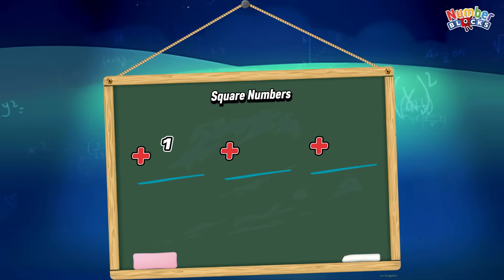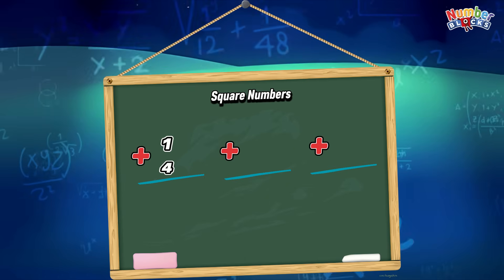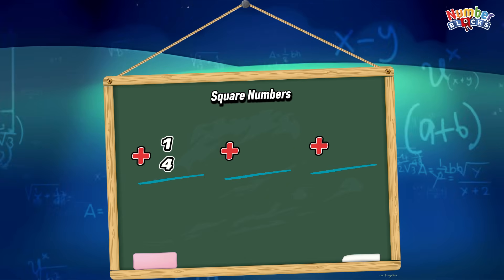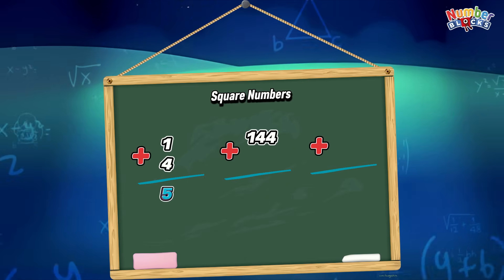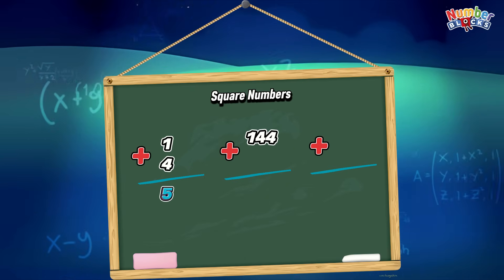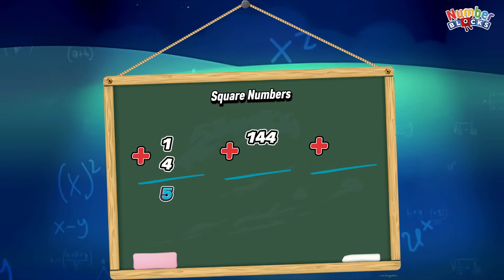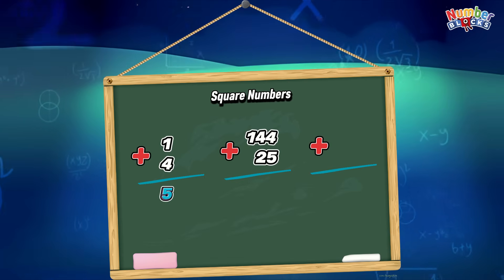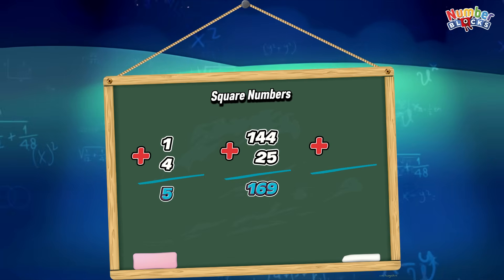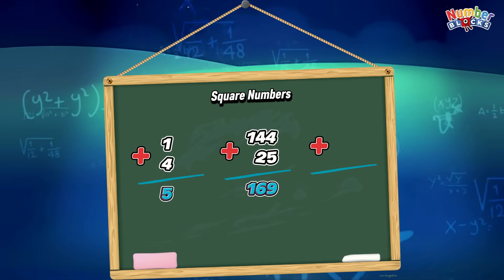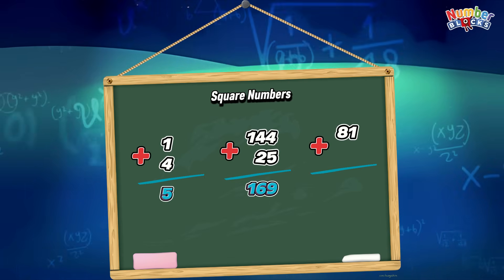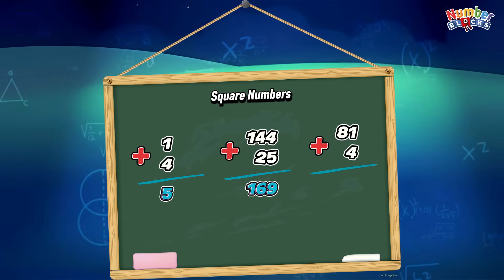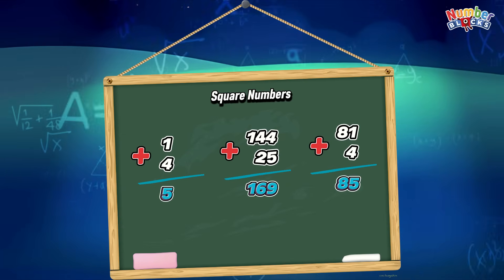1 plus 4 is equals to 5. 144 plus 25 is equals to 169. 81 plus 4 is equals to 85.